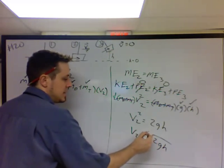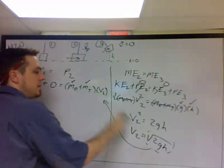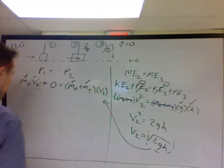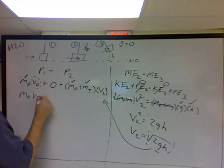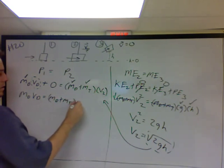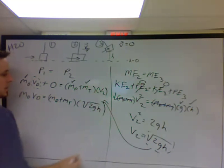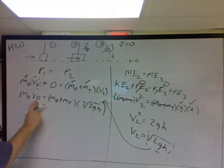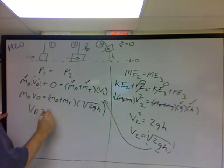Now I'm going to take this, and I'm going to plug in that value right here. So I'm going to rewrite this line. And now solve for velocity of the dart. Just divide both sides by mass of the dart.